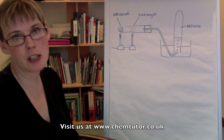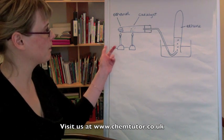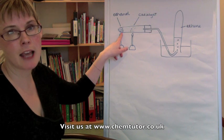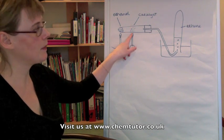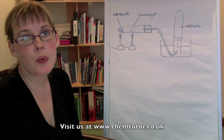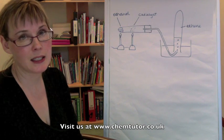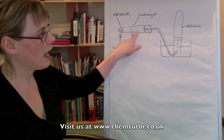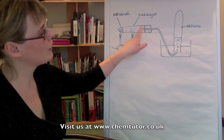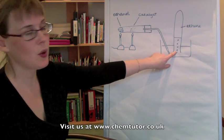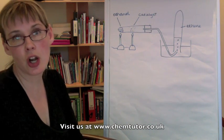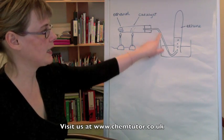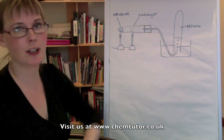If you did this experiment in your classroom, you might remember that you had a test tube with mineral wool soaked in ethanol, and mineral wool here in your test tube which is impregnated with a catalyst of aluminium oxide. Both are heated and with any luck you will get some ethylene being produced. Because ethylene is a hydrocarbon gas, it is not soluble in water, so it can be collected on top of water in this way.